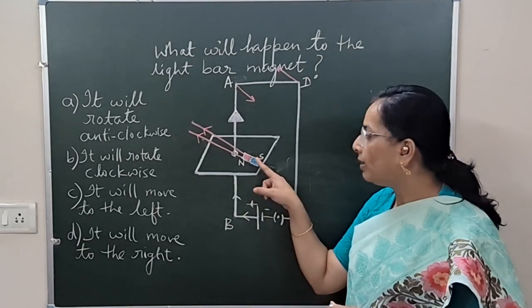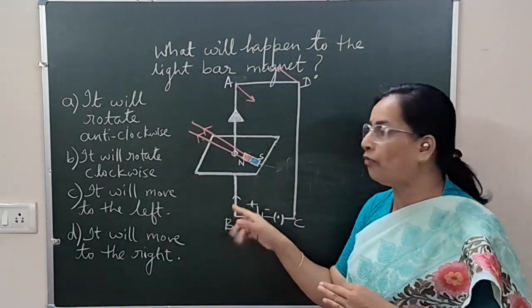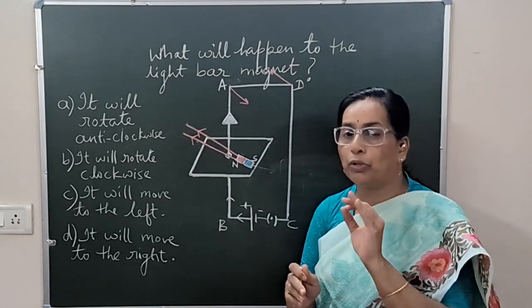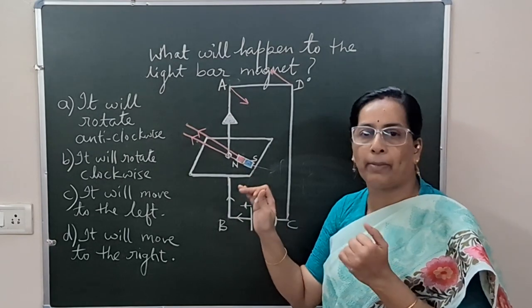In this case, just assume that the bar magnet is stationary and this conductor is free to move. Now, let us apply Fleming's left-hand rule to know which direction this conductor may move when it is placed in the field of a magnet.